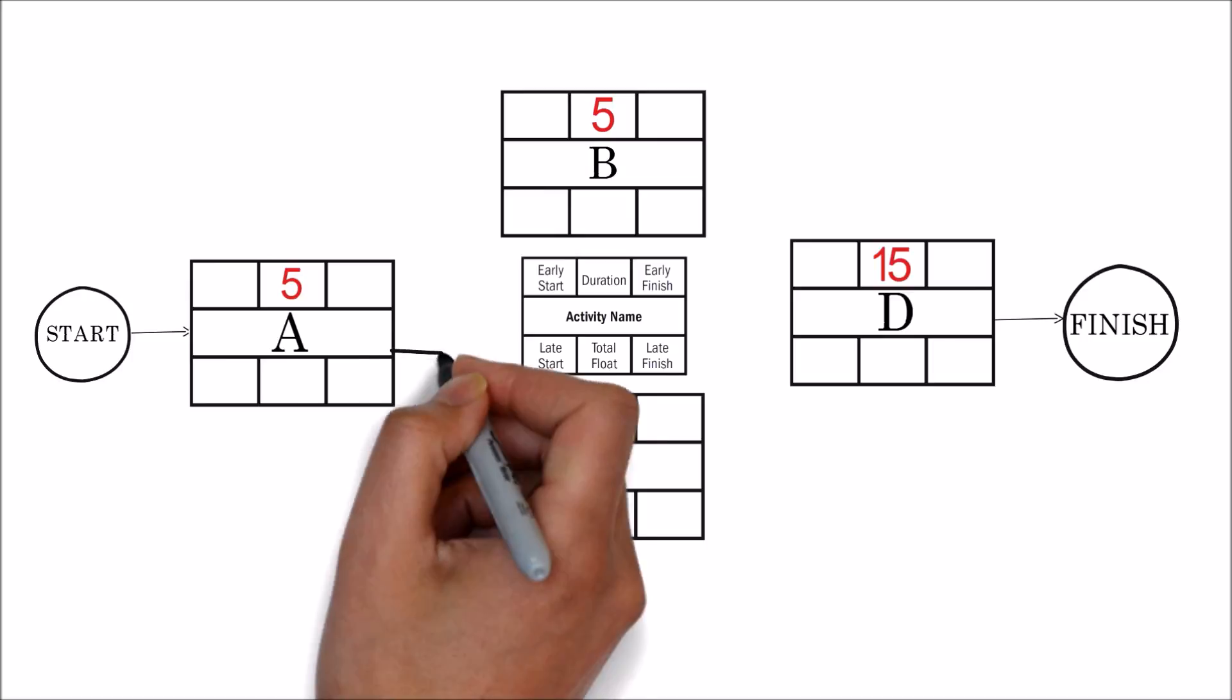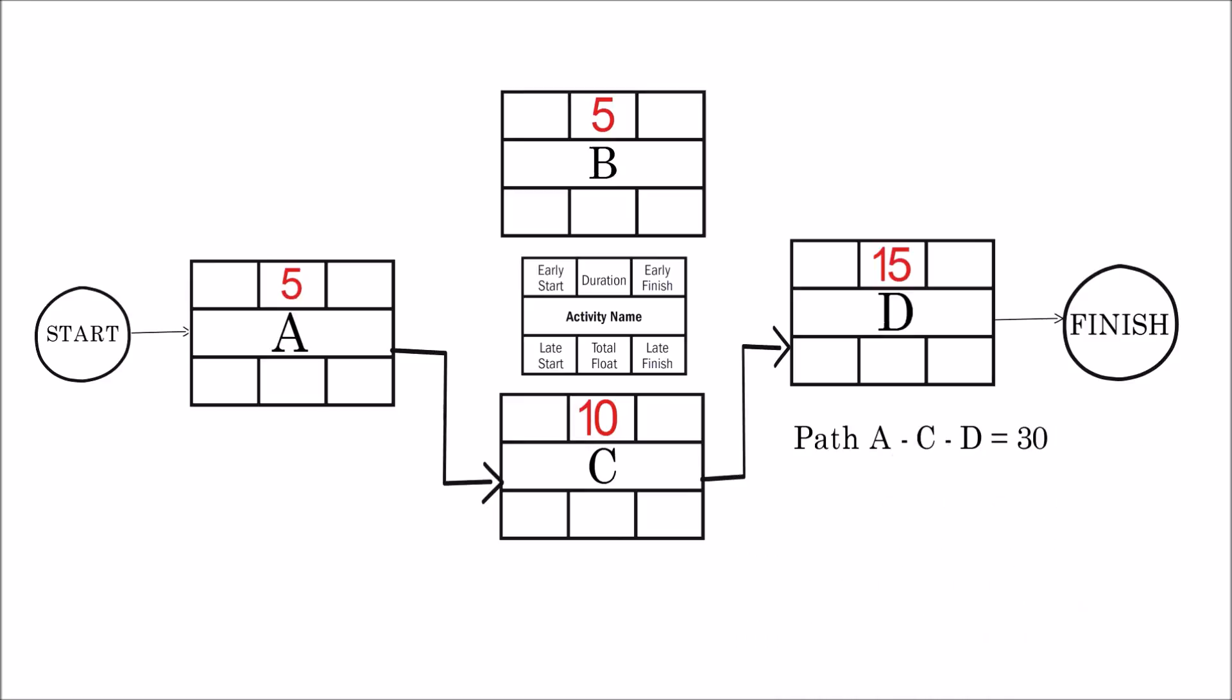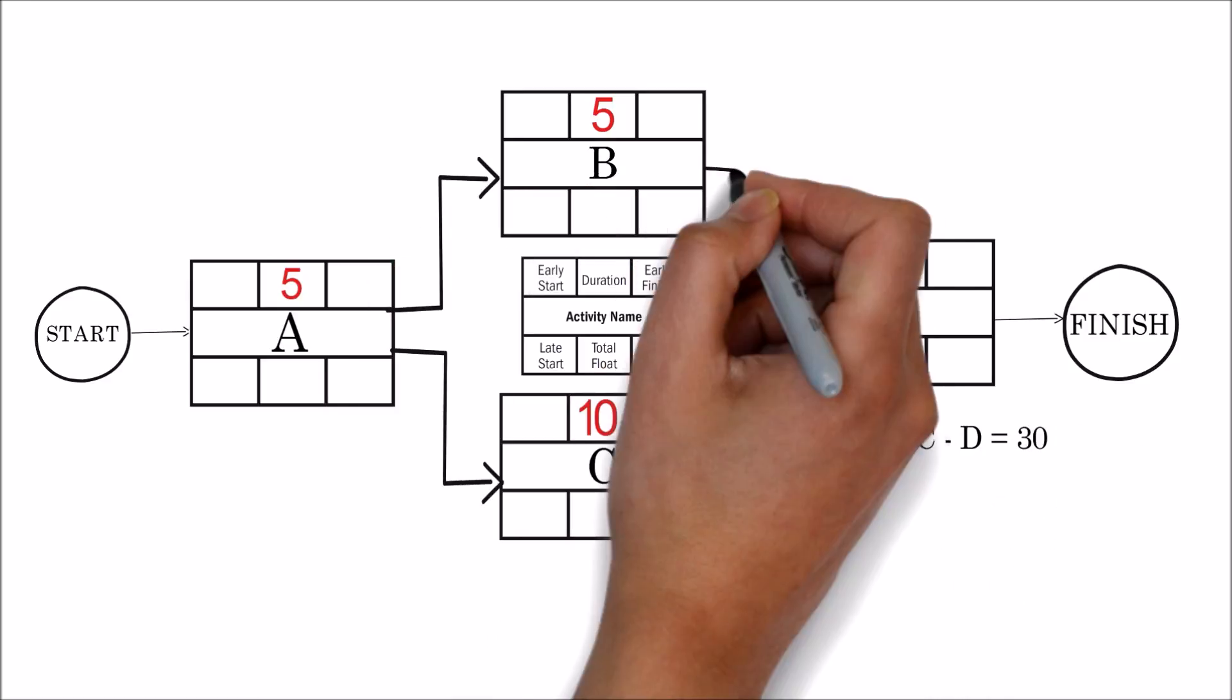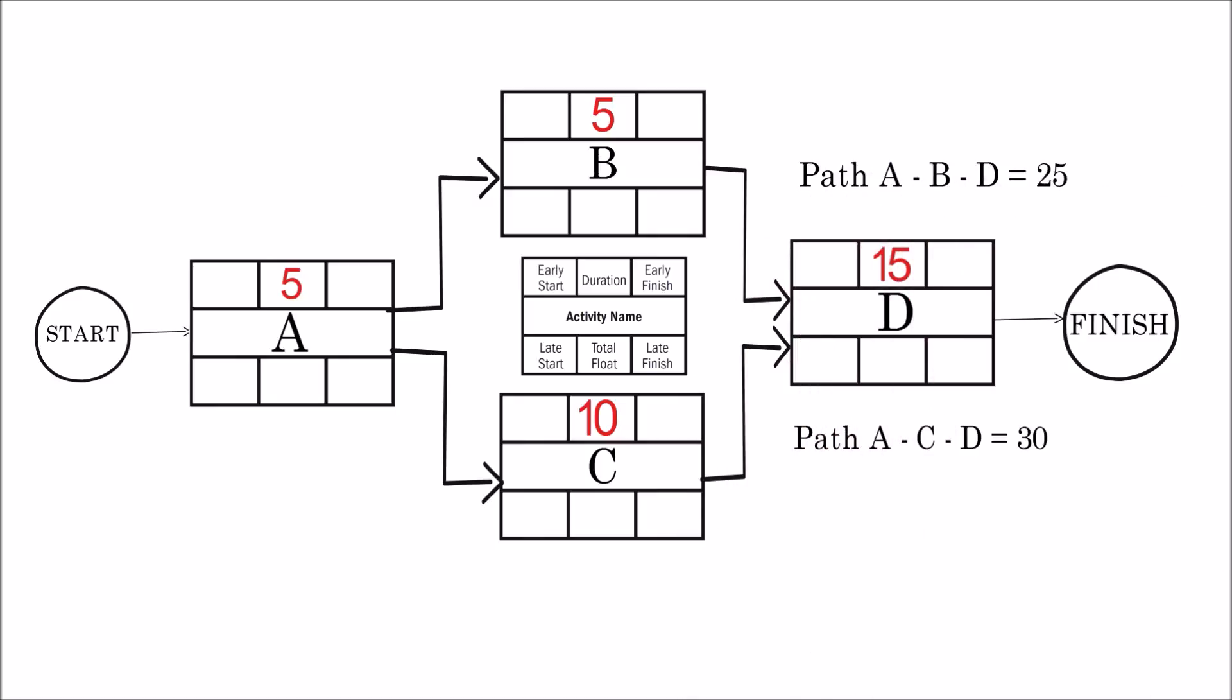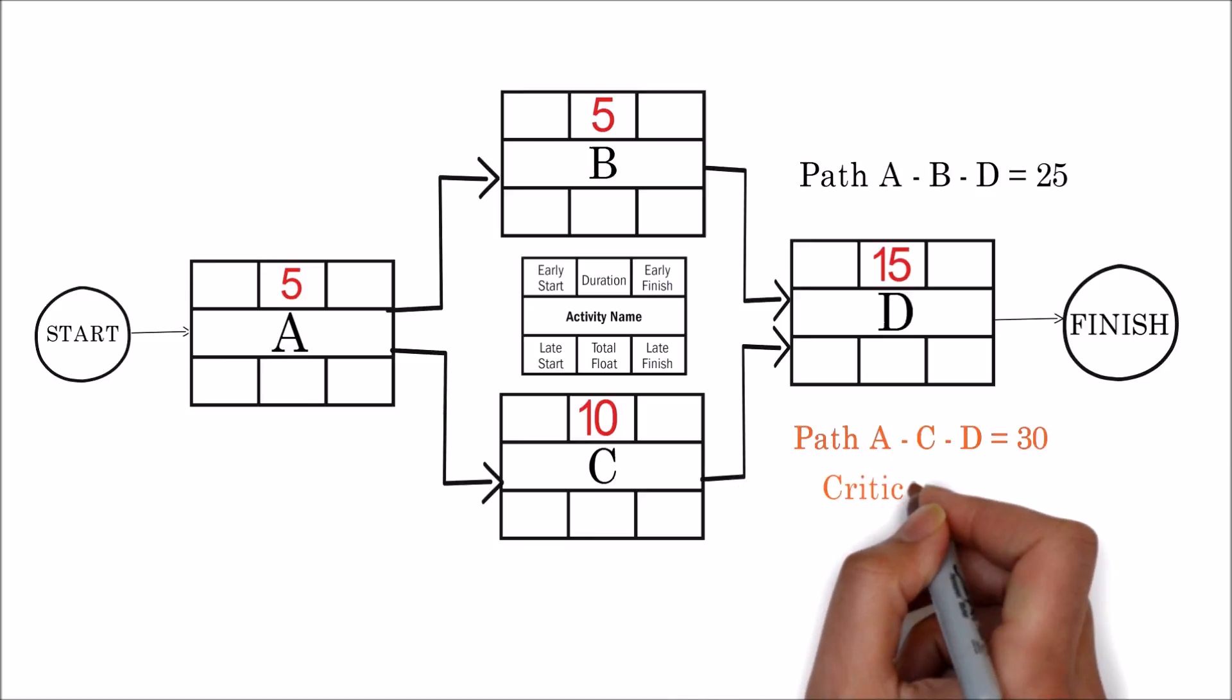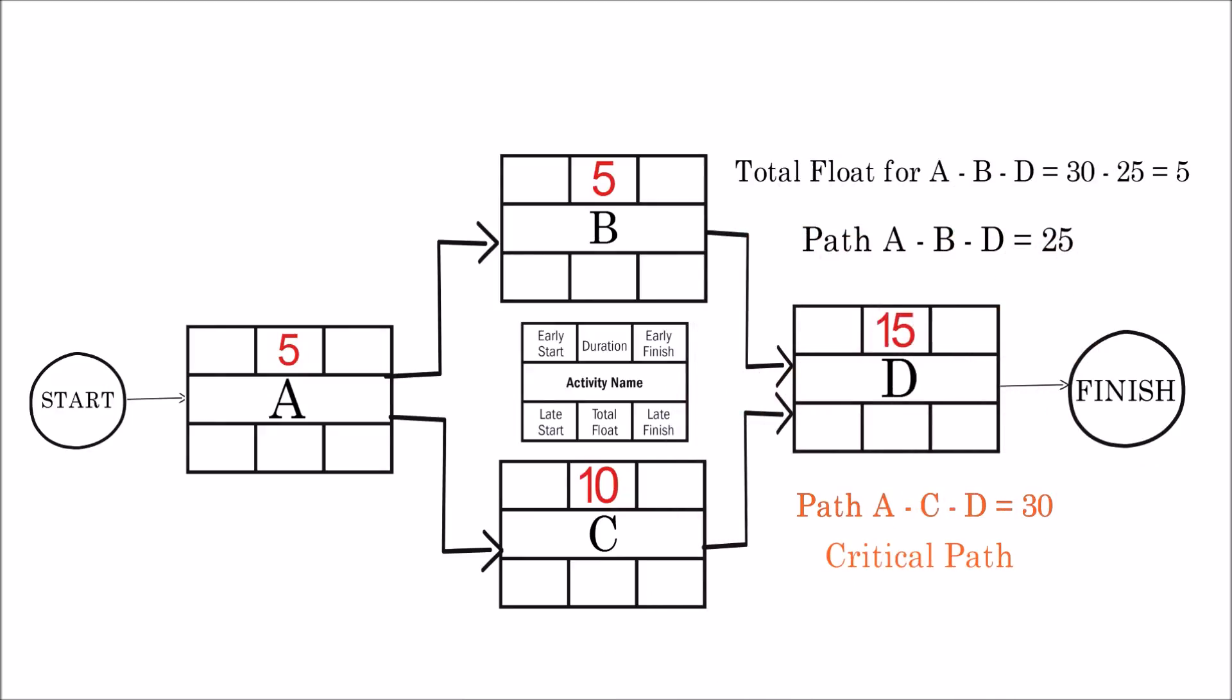Path A, C, D has 5 plus 10 plus 15 days that is equal to 30 days. Path A, B, D has 5 plus 5 plus 15 days that is equal to 25 days. The longest duration on which the project can be completed is 30 days. Hence A, C, D is the critical path. Now let's calculate the float for the path A, B, D. It has a float of 30 minus 25 days which is equal to 5 days. So the total float available for A, B, D is 5 days.